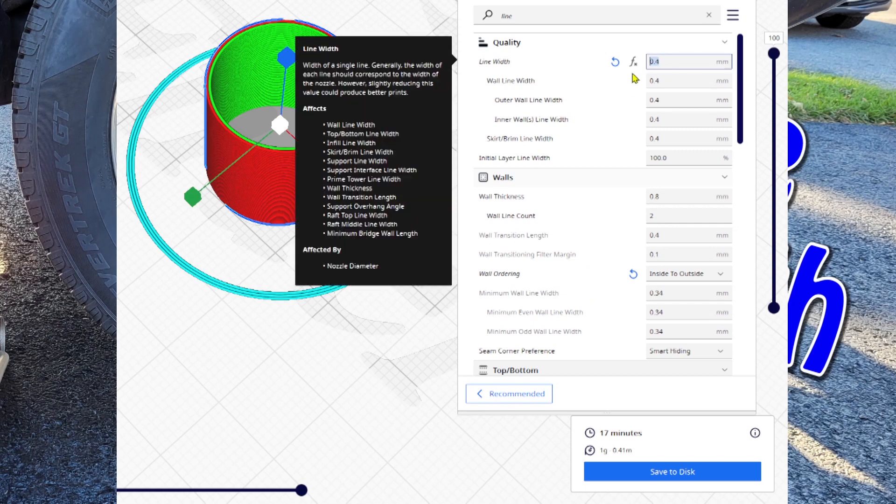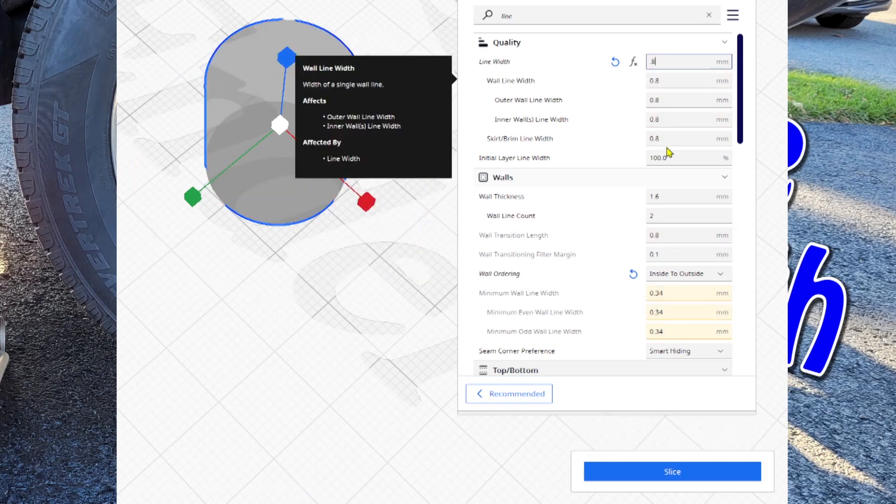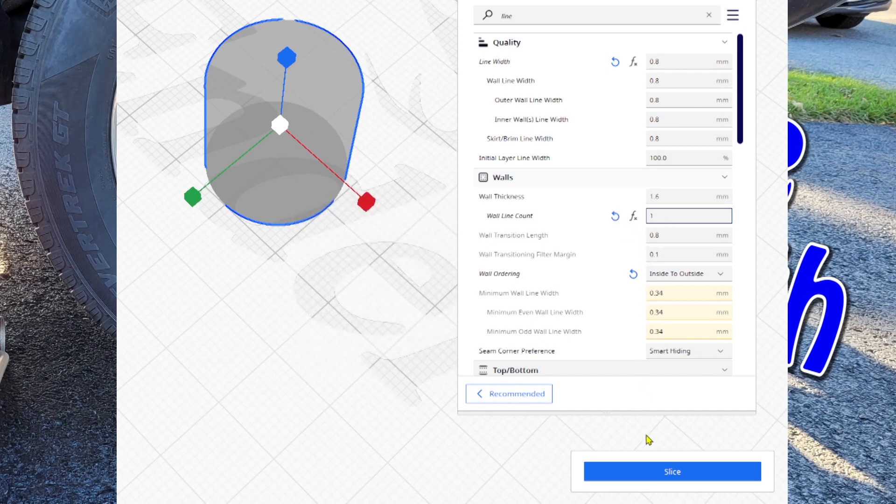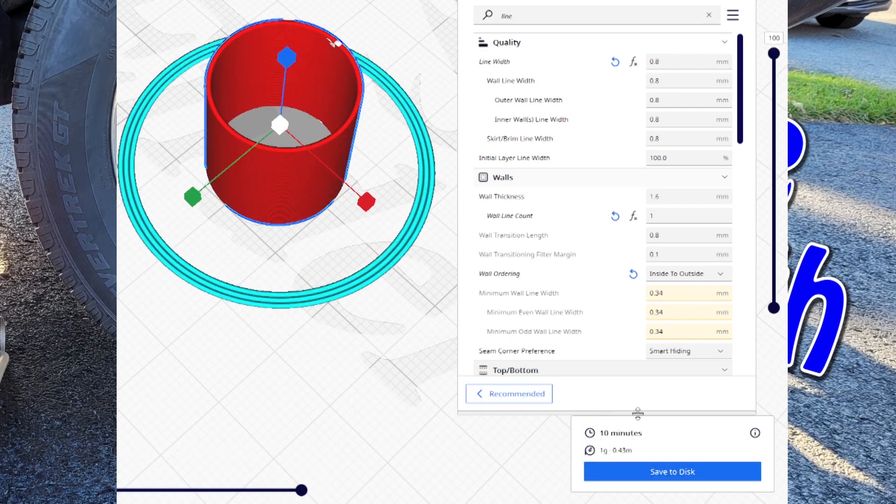But if I go ahead up here and I change to a 0.8 millimeter line width and I come down and I change it to a single line and then I slice, you're going to see that it is 10 minutes. You can see the single line up here on the left. So that's seven minutes savings on the printing, but is it stronger? The other thing is imagine this on a much larger scale—the savings are going to be amplified. So if you stick around, I will walk you through the test results for strength.